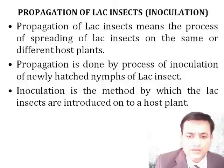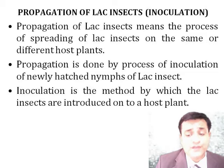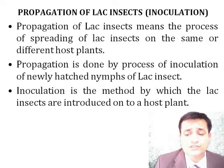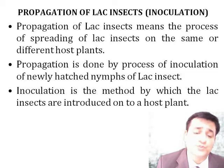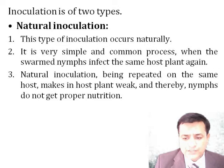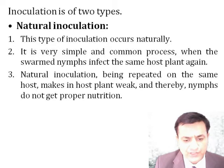Propagation of lac insects, the second step also called inoculation, means the process of spreading of lac insect on the same or different host plants. Inoculation can be done naturally or artificially. In the natural way, which is a simple and common process, swarm nymphs naturally infect the host plant. However, results are not good because the host plant becomes weak from repeated inoculation and cannot get proper nutrition.